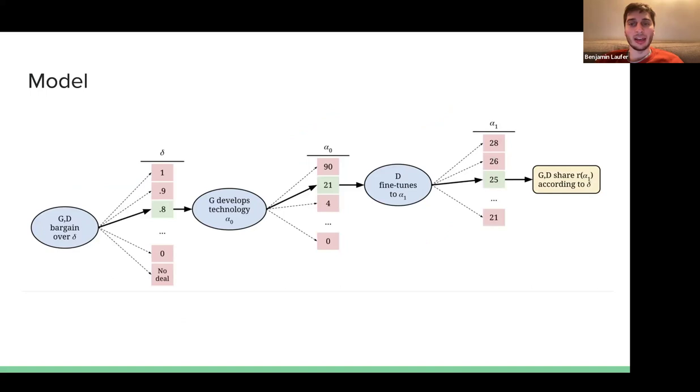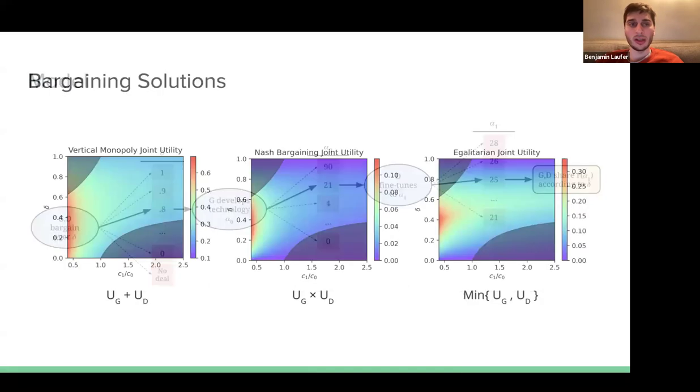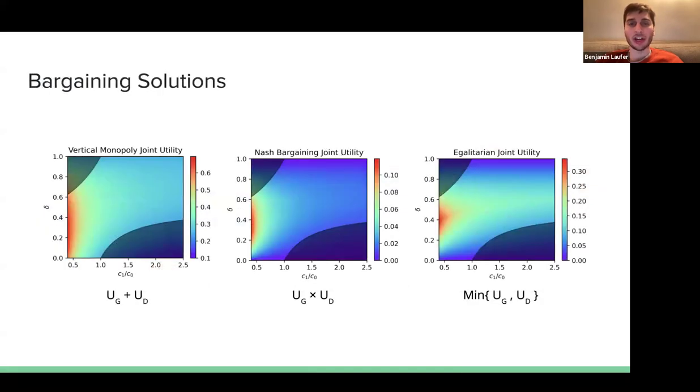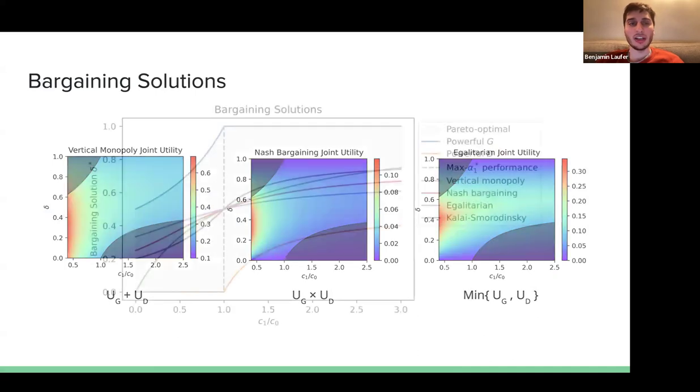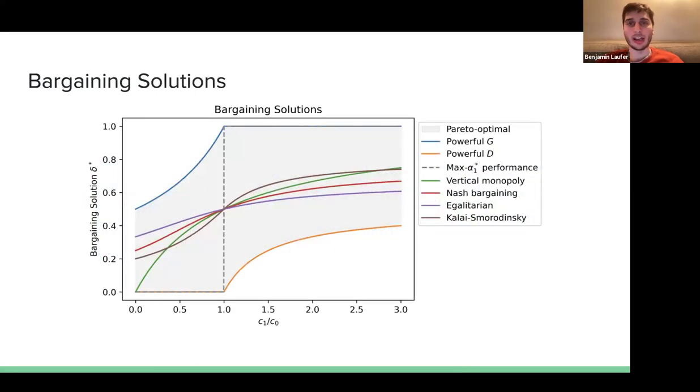We combine a sub-game, a sequential game theoretic setting, with a bargaining game where the generalist and the specialists engage in a bargain over how to distribute the revenue. Bargaining involves aggregating between the utilities of potentially many players and finding a solution that satisfies the set of different interests involved in the interaction. Here is a depiction of some of the bargaining solutions and analysis we conduct in the paper.